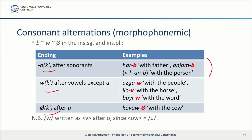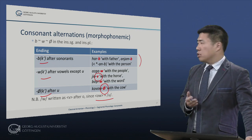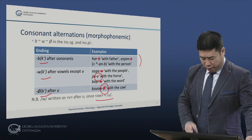Then, after vowels except U, we have W: so 'as-gau' meaning 'with the people', 'zio' meaning 'with the horse' — note that that is written with a V, because OW stands for the vowel U — and 'bayu' meaning 'with the word'. Finally, after U, there is only zero: the W disappears, so we have 'kawu' meaning 'with the cow'. This alternation occurs only in these case forms.